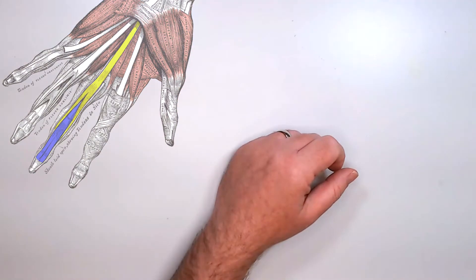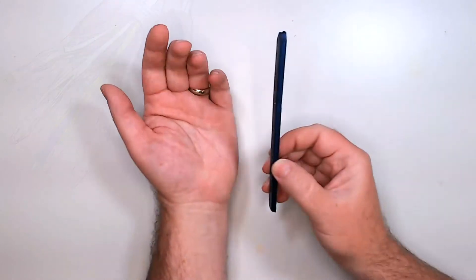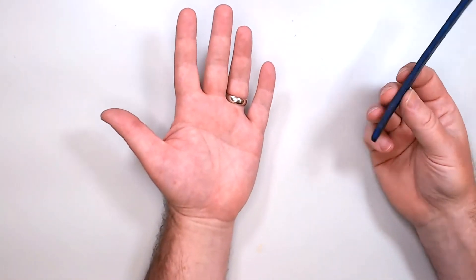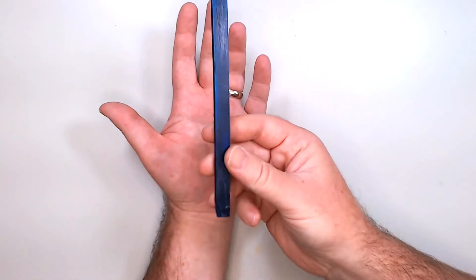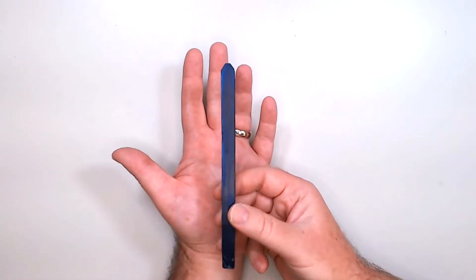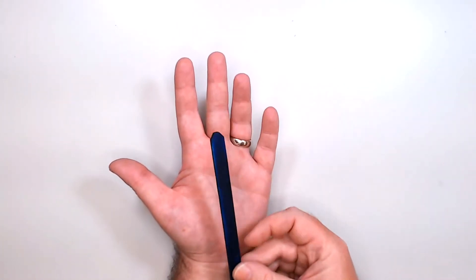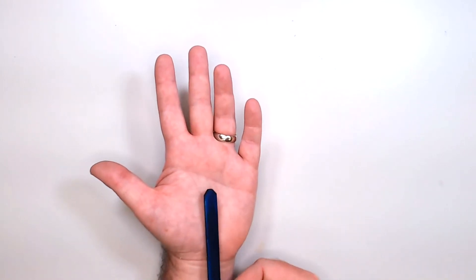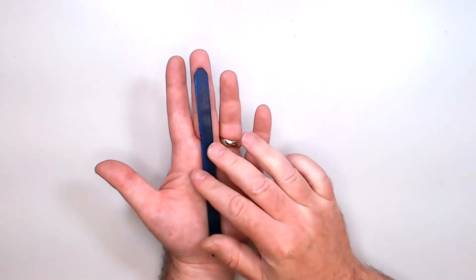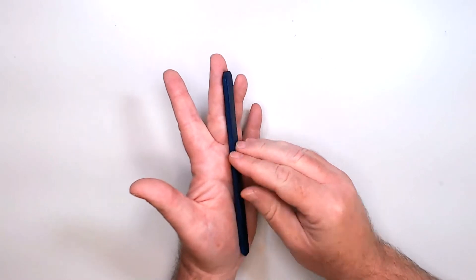So what that looks like, using a simple model, this blue represents the tendon of flexor digitorum profundus. You can see it comes out along like this, inserts here, just distal to the distal interphalangeal joint.